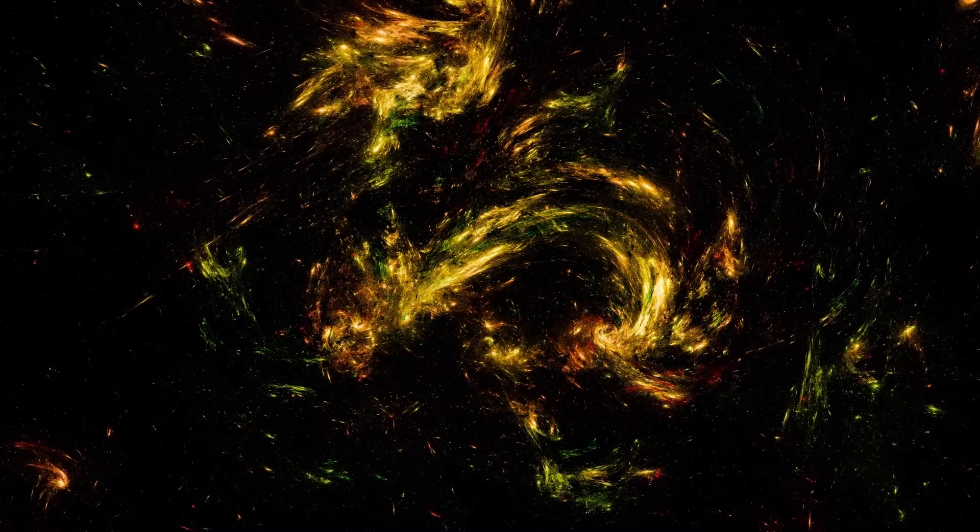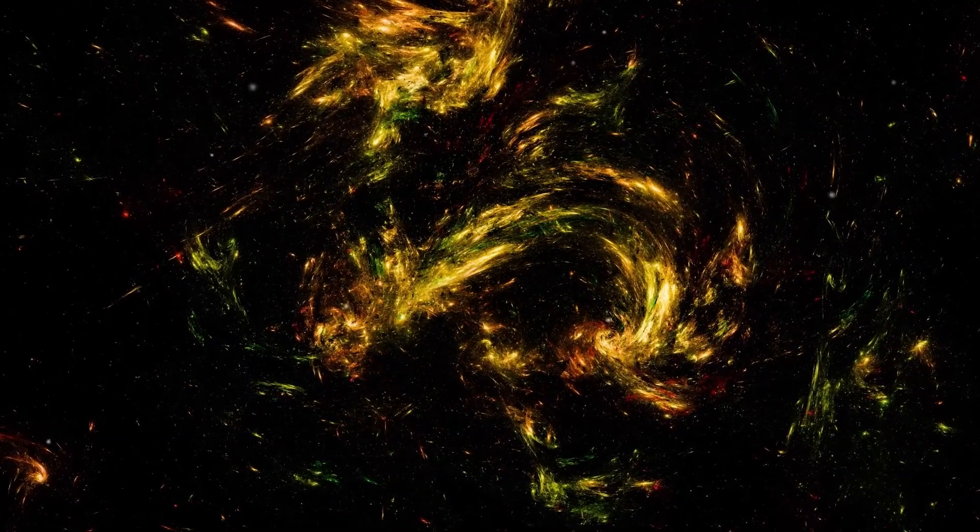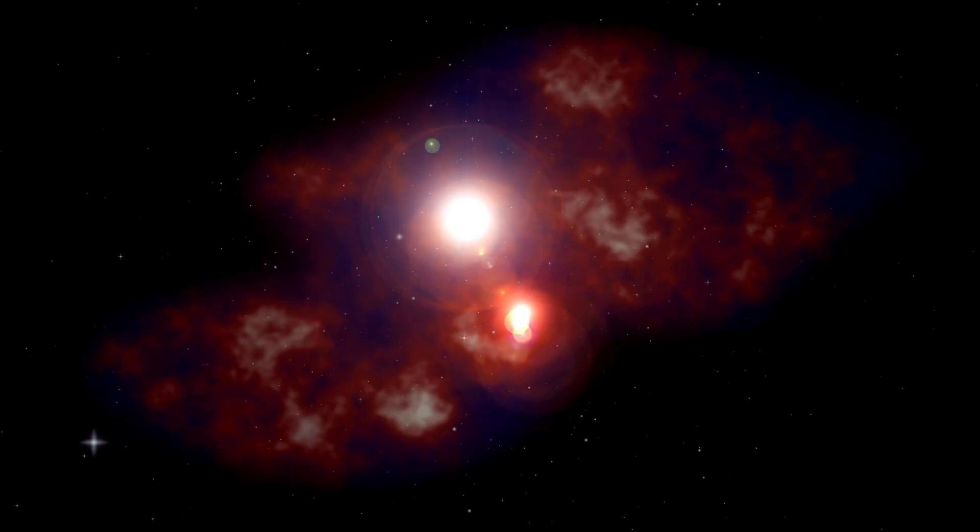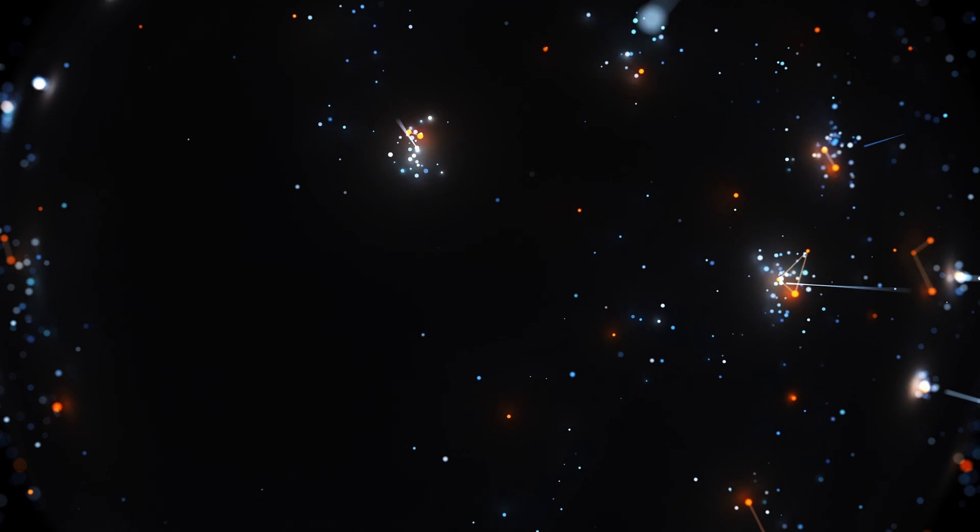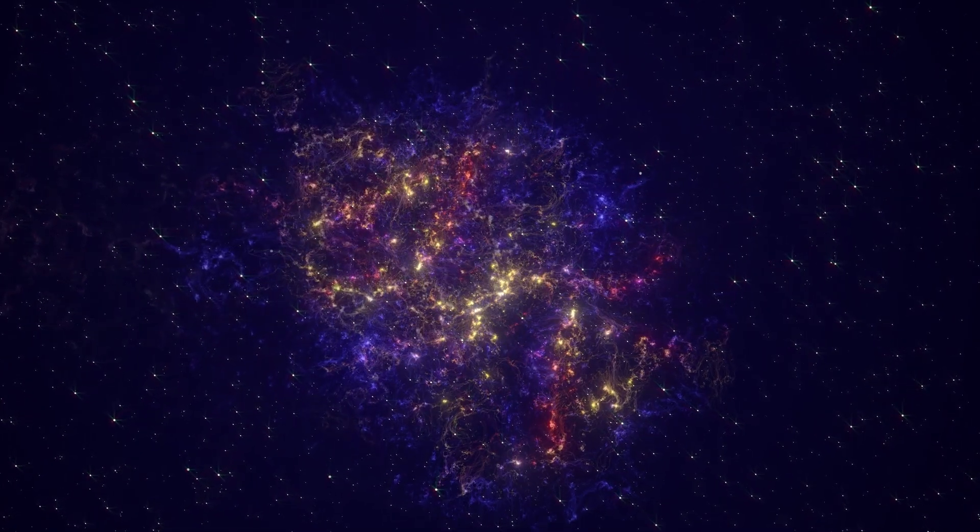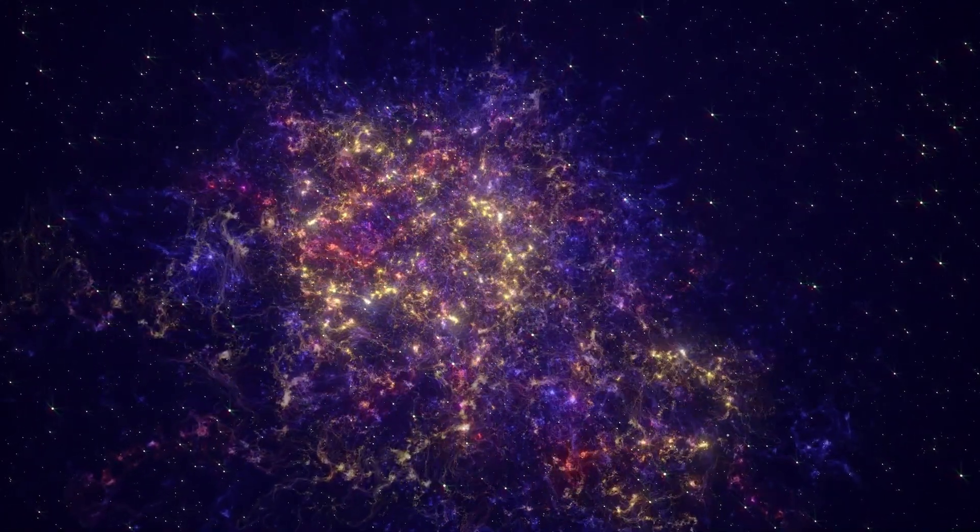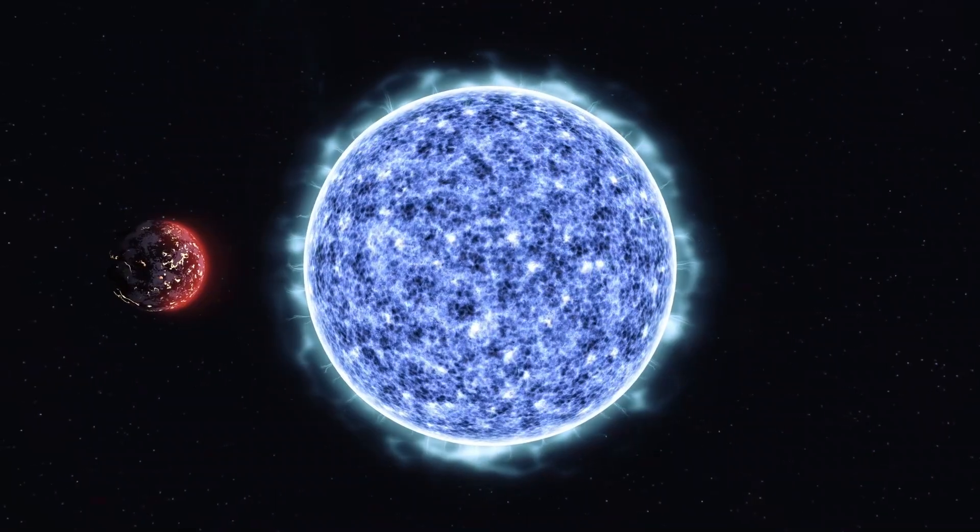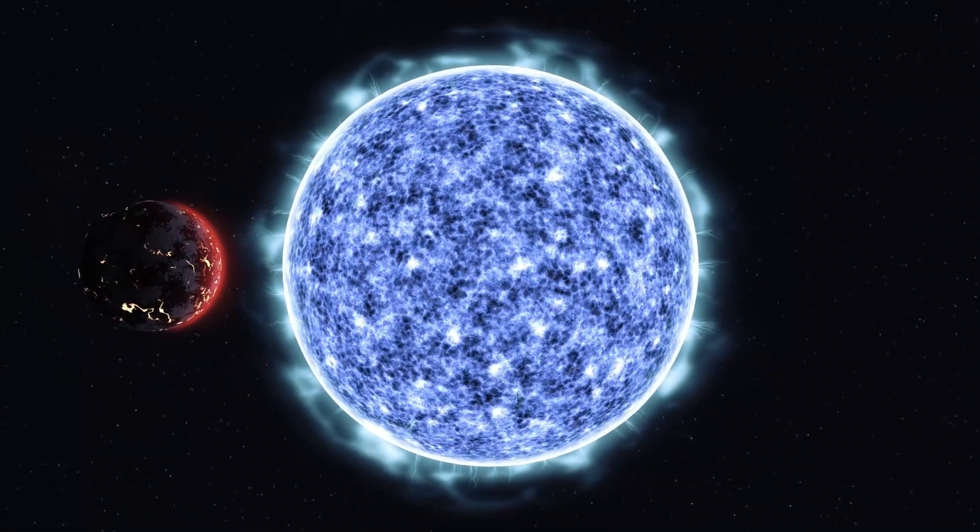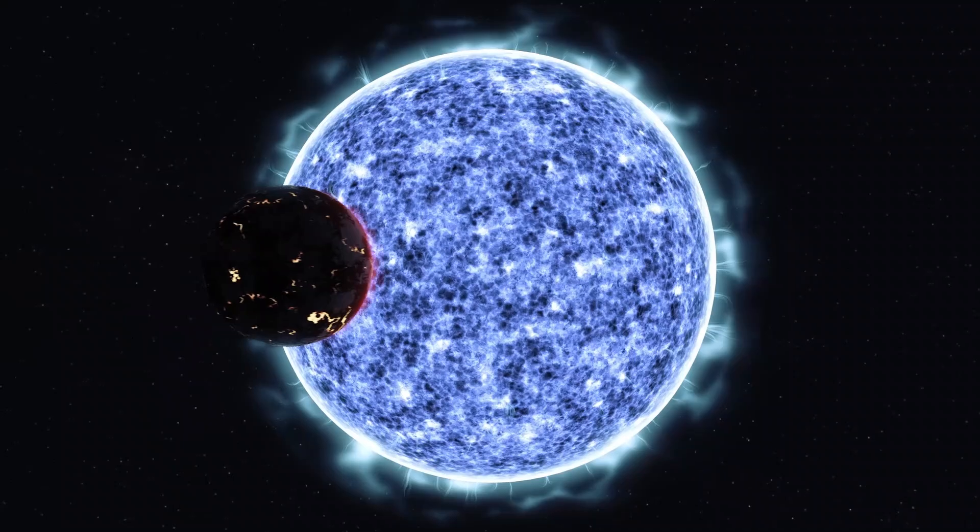These discoveries about Betelgeuse aren't just about that one star; they give us a big understanding of red giants, which are these super huge stars known for making a lot of stuff in the universe. Stars like Betelgeuse are like giant factories where elements heavier than helium get created. Astronomers call these heavier elements metals, and how they form in red giants is a really important process. Understanding how star spots affect temperature changes and block radiation helps astronomers get a deeper understanding of what's going on inside red giants.